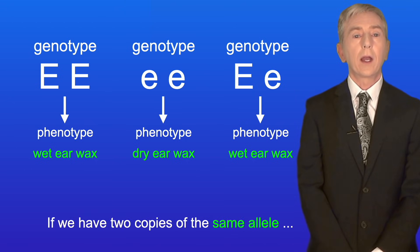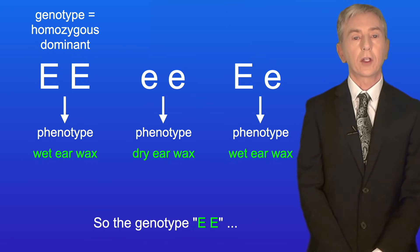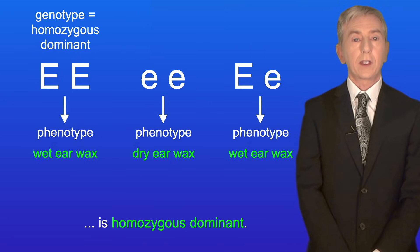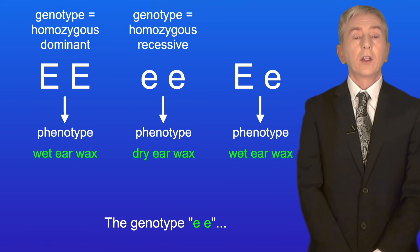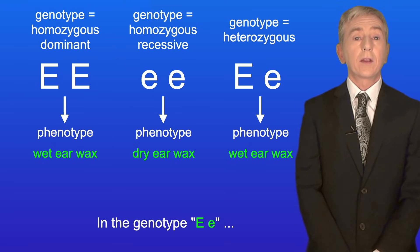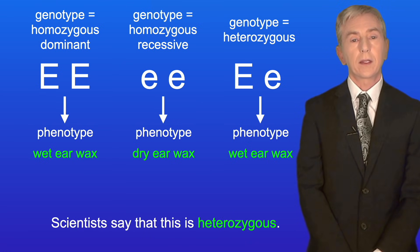If we have two copies of the same allele, then we call this homozygous. So the genotype EE is homozygous dominant, and the genotype ee is homozygous recessive. In the genotype Ee we have two different alleles, and scientists say that this is heterozygous.